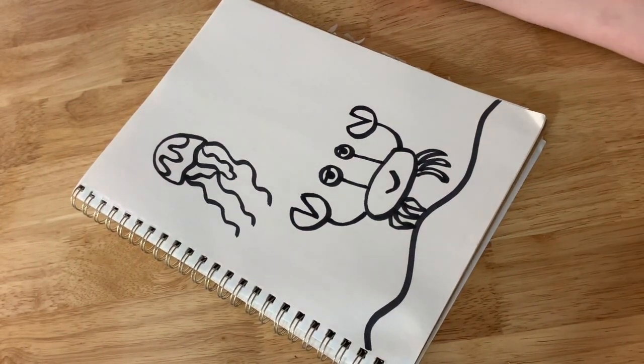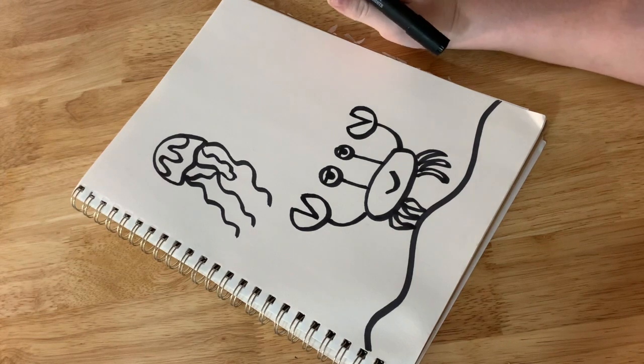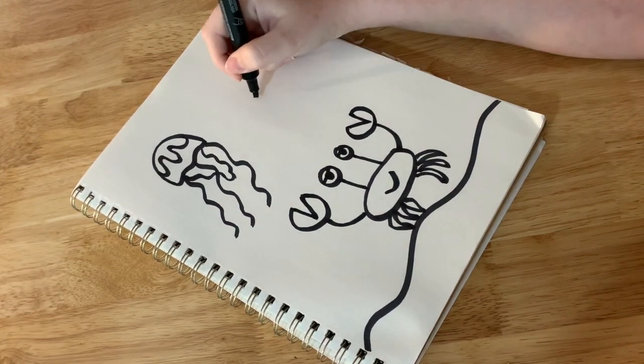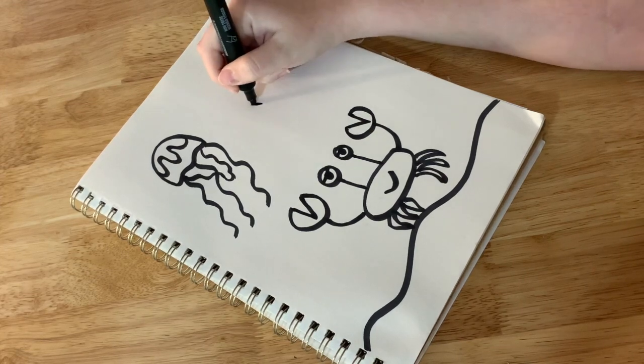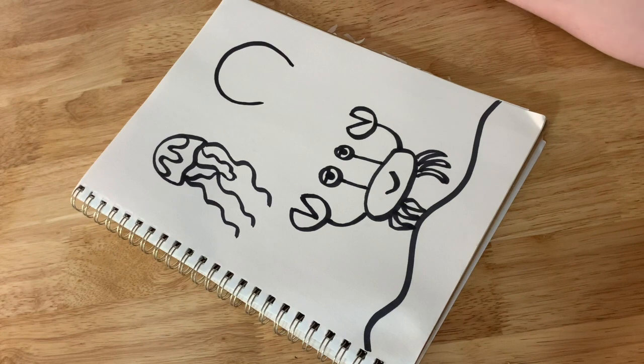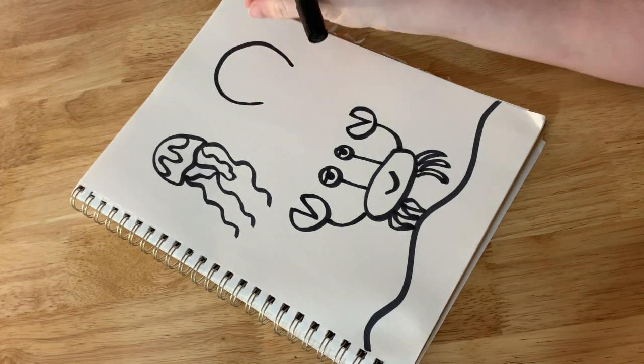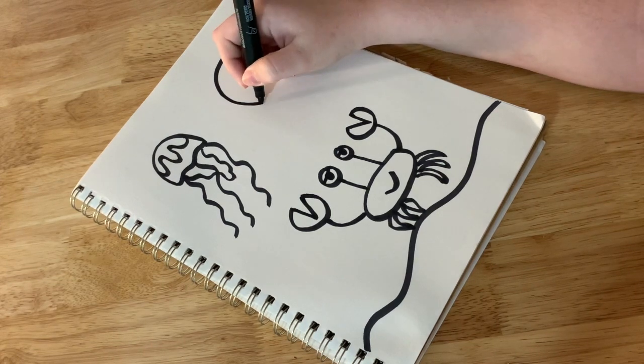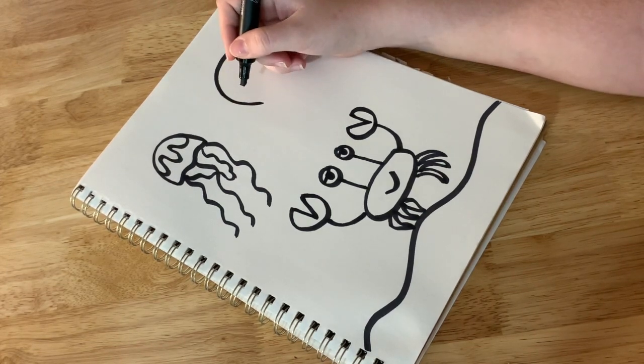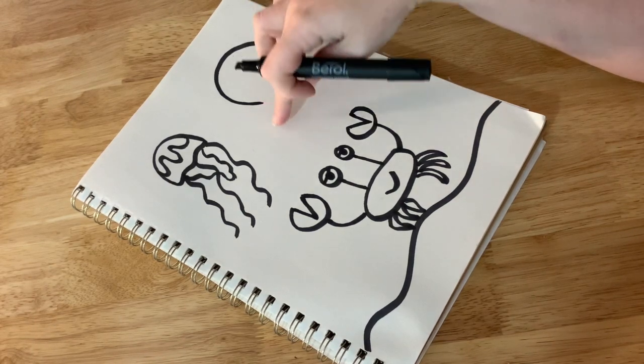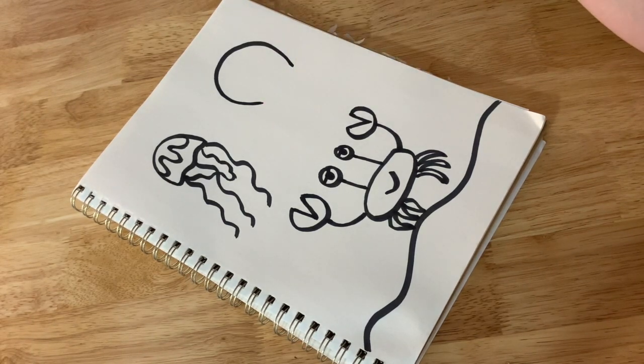Now last but not least we are gonna learn how to draw an octopus. So for an octopus I'm going to start with an upside down U that these two points come in a little bit kind of like the top of a balloon. Then we're gonna give our octopus - so octopus, the octa at the beginning of octopus is Latin for eight. And that's because octopus have eight legs.